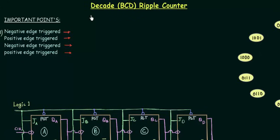In this presentation I will teach you the Decade or BCD Ripple Counter. This is the last type of asynchronous counter that we have to see in this course. After this we will move to synchronous counters. Before that I will explain a few important points that you will not find in your book, but they are important and will help you solve various exam questions.